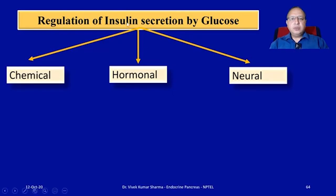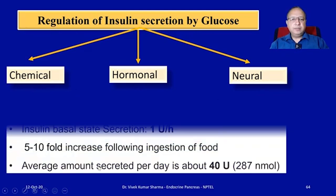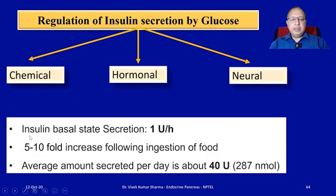The regulation of insulin secretion by glucose can be primarily divided into chemical control, hormonal, and neural. The baseline insulin secretion is roughly around 1 unit per hour, and a 5 to 10-fold increase occurs following the ingestion of food. The average amount secreted per day is roughly around 40 units.